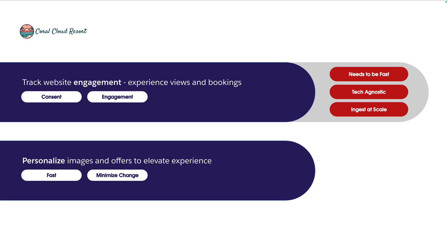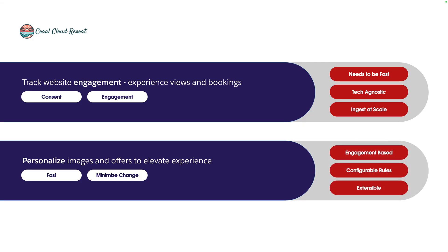The second goal is the marketing team have expressed an interest in being able to personalize images and offers so that they can elevate the experience for people interacting with the brand online. The key requirement here is to minimize change to the existing website. We want that to be engagement-based, so depending on what someone's doing on the website, we might want to show different images and offers, and those rules need to be configurable. We want the framework to be extensible as we move into the future so we can build upon it.